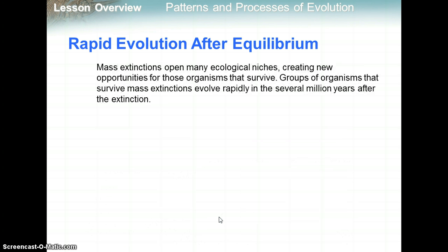Mass extinctions open up ecological niches, creating new opportunities for surviving organisms. Groups of organisms that survive mass extinctions evolve rapidly in the several million years after the extinction, because a new ecosystem is now open to them with less predation and less competition from predators.